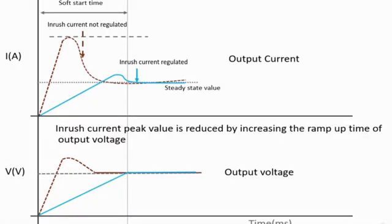We increase the slope of inrush current into the circuit by increasing the time for which the output voltage ramps up to the steady state value. The peak value of inrush current is reduced based on dV/dt slope and the currents are regulated accordingly.